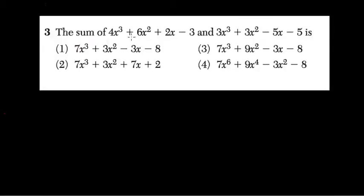Okay, so in this problem they want us to find the sum of 4x cubed plus 6x squared plus 2x minus 3 and 3x to the third plus 3x squared minus 5x minus 5.